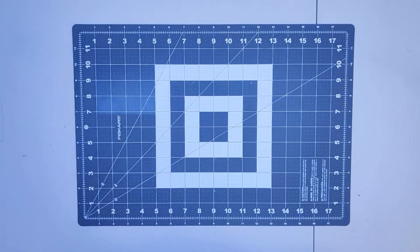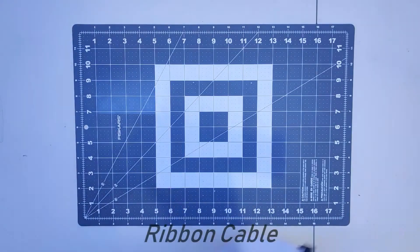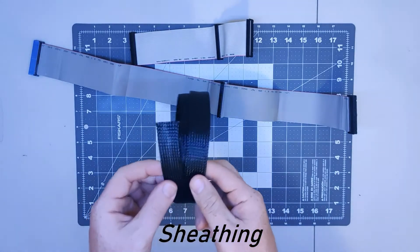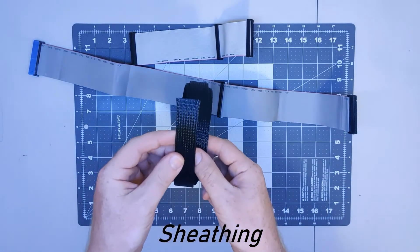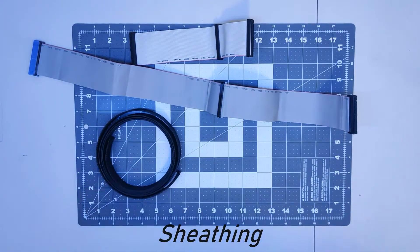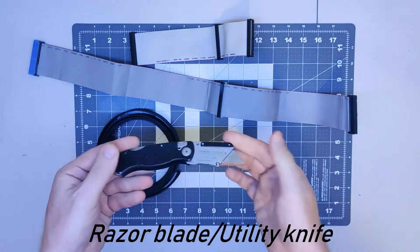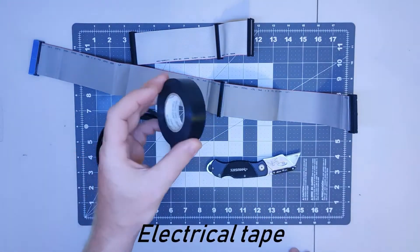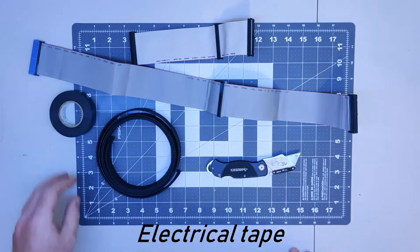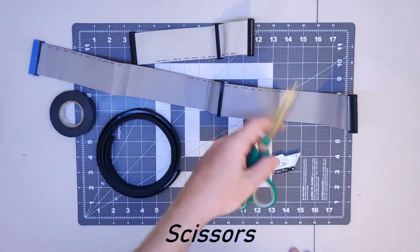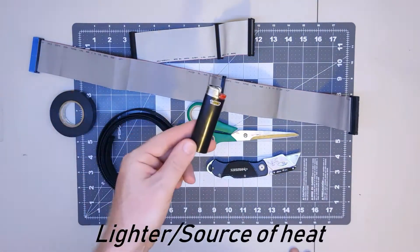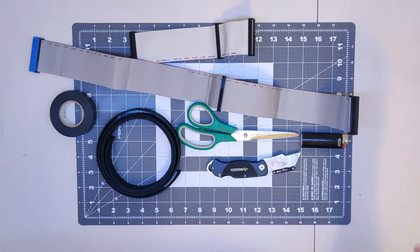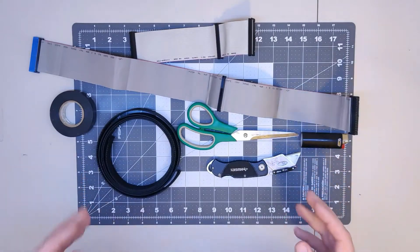The things you'll need for this project are your ribbon cable. You will also need some sheathing. This is one-inch nylon. You will need a razor blade or utility knife, electrical tape, a pair of scissors, and a lighter. With these components, we're going to put together a sleeved ribbon cable.